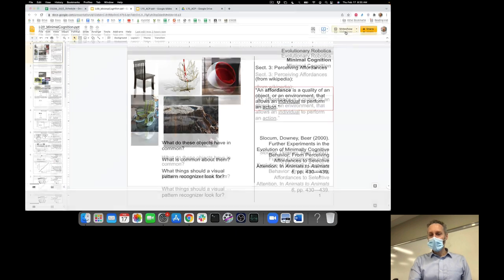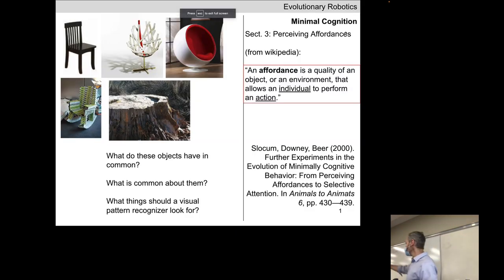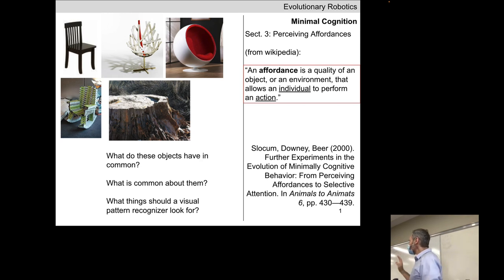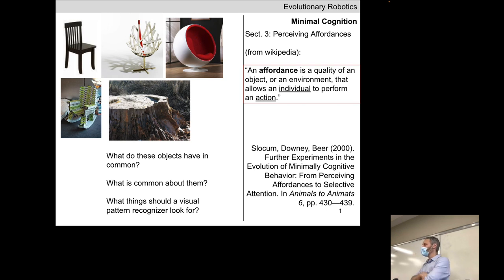We're going to look at four building blocks of intelligence. These are four experiments taken from one research paper. I'm going to start with the first of four, which is the ability to perceive affordances. Who's taken a psych class and heard of affordances before? Affordances is an idea that comes from psychology, and we're actually going to see affordances several places throughout this course. Affordances is a hypothesis about how organisms — and in particular how humans — see the world.